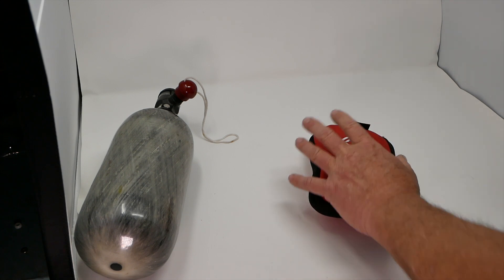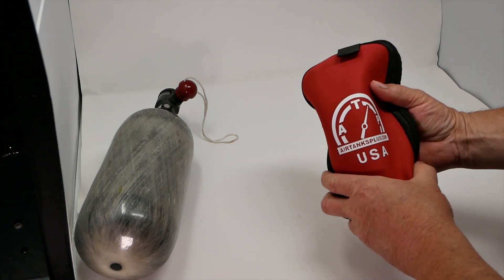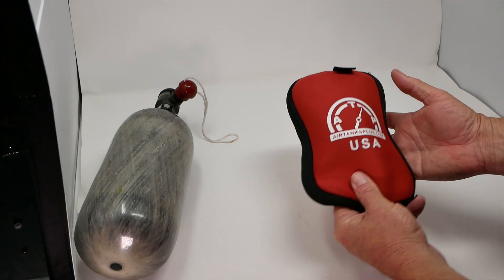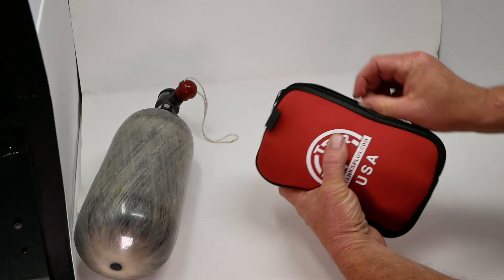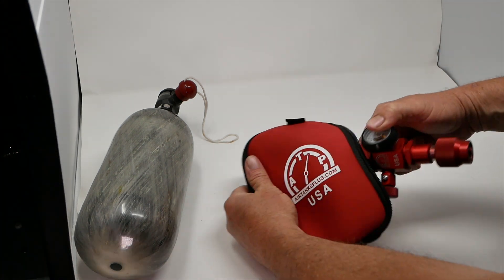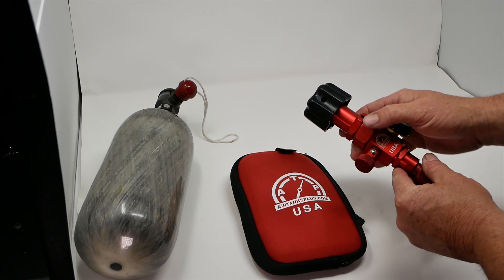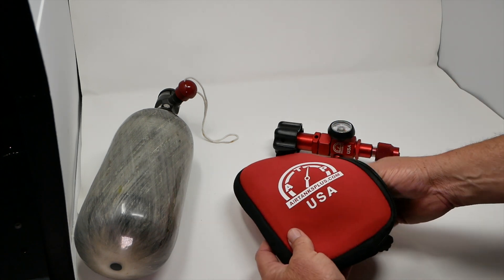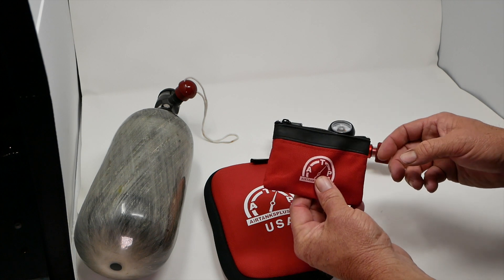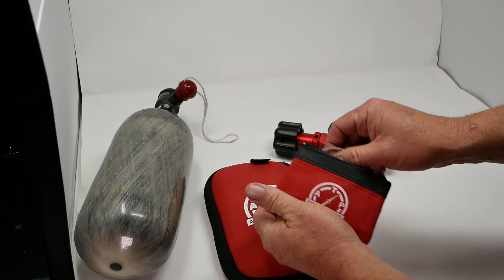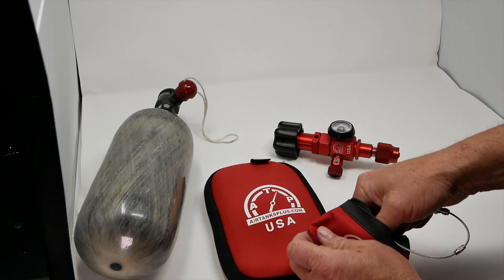So this is it. It comes in a nice neoprene pouch so it's compact, easy to transport. Inside this bag you'll find the Reg Boy and another pouch. This pouch has some accessories in it. I'm going to open that up and show you the accessories and then we'll talk about everything.